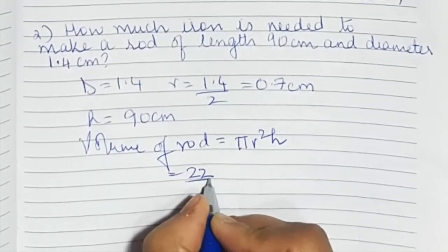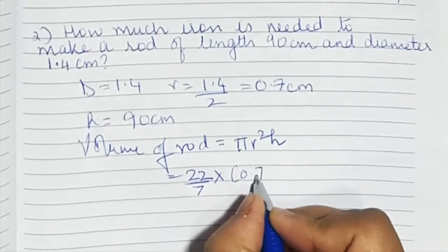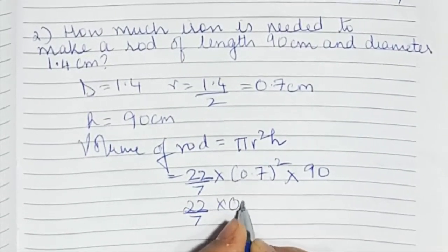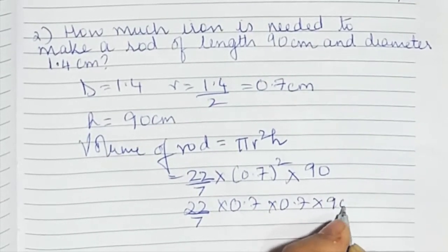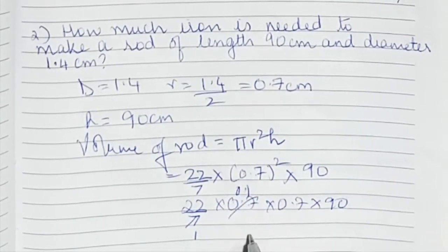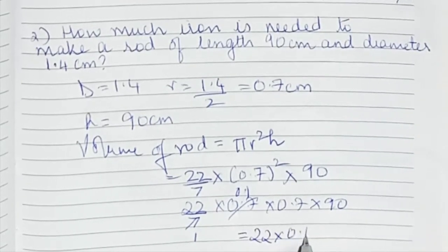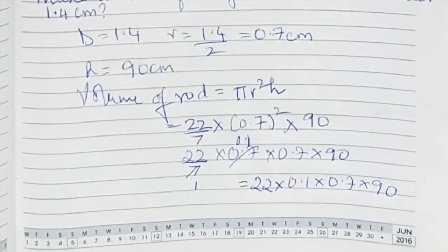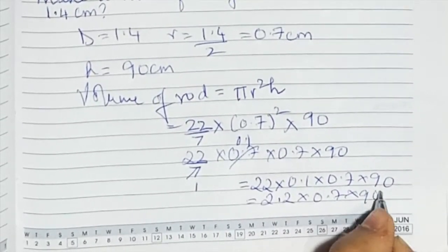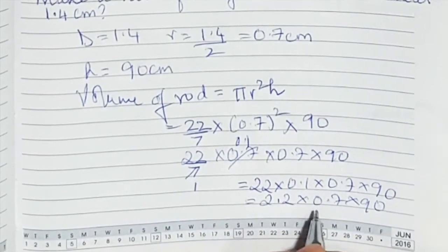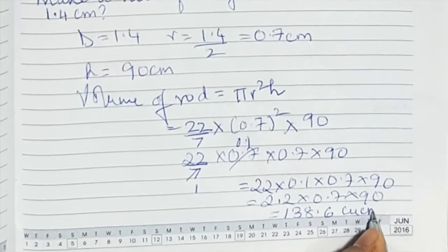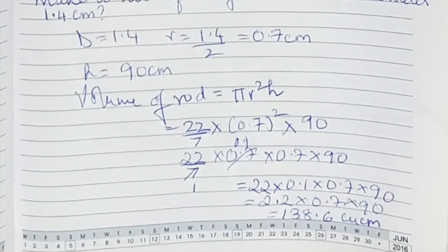Pi is 22 upon 7, r squared means 0.7 squared, and h is 90. So, 22 upon 7 into 0.7 into 0.7 into 90. Simplifying, 7 ones are 7, so we get 22 into 0.1 into 0.7 into 90. That gives 2.2 into 0.7 into 90. When we multiply all this, the final answer is 138.6 cubic centimeters.